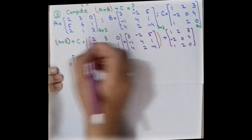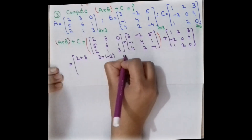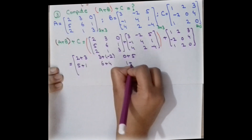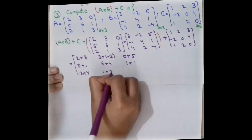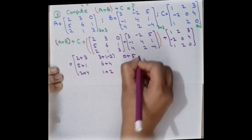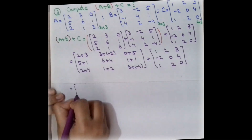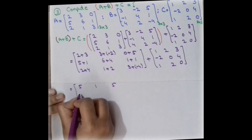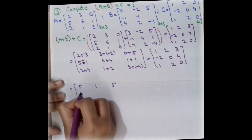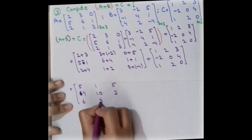We first write the values of A and B and add corresponding elements: 2 plus 3, 3 plus minus 2, 0 plus 5, 6 plus 4, 1 plus 1, and in the last row: 2 plus 4, 1 plus 2, and 3 plus minus 4. Computing: 5, 1, 5, 4, 10, 2, 6, 3, and minus 1. This is the result of A plus B.